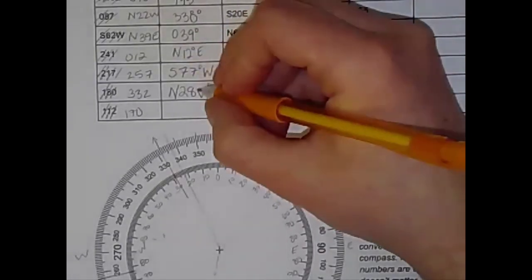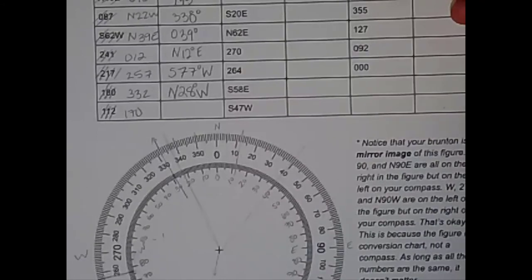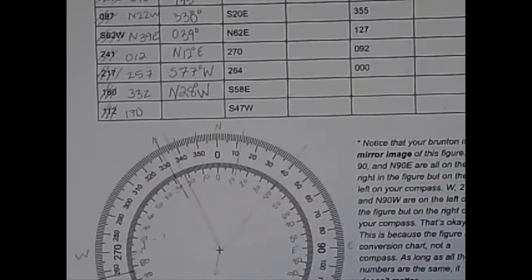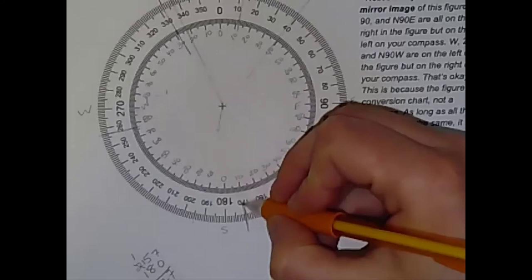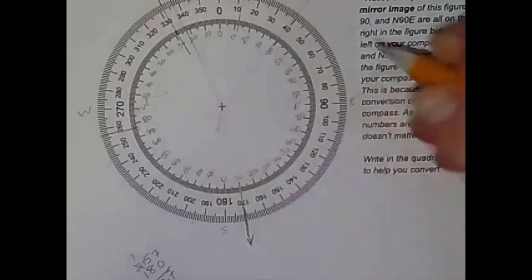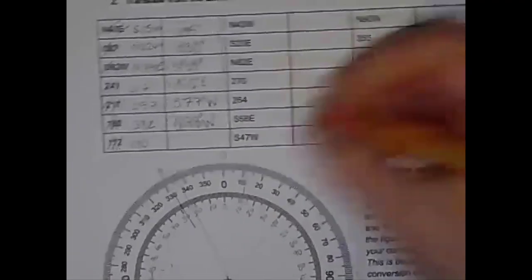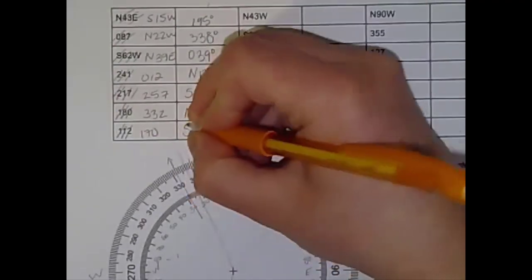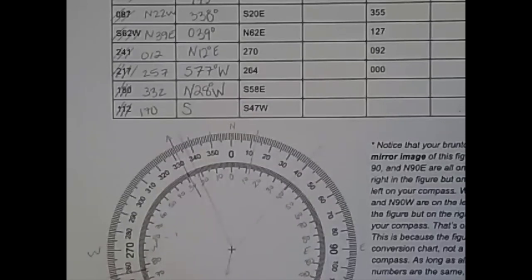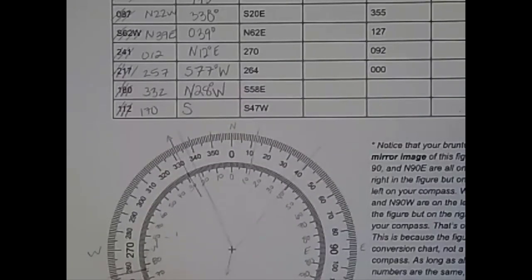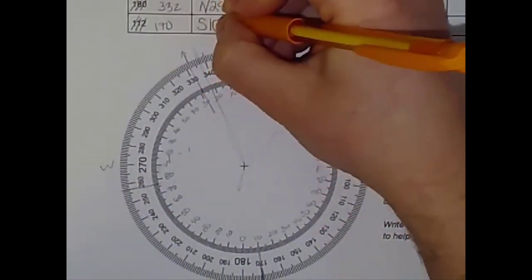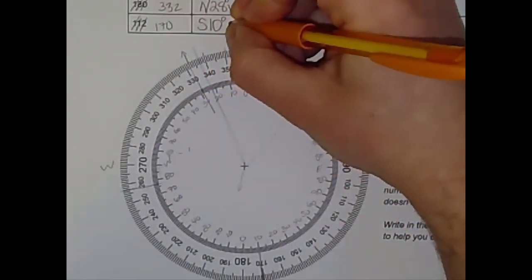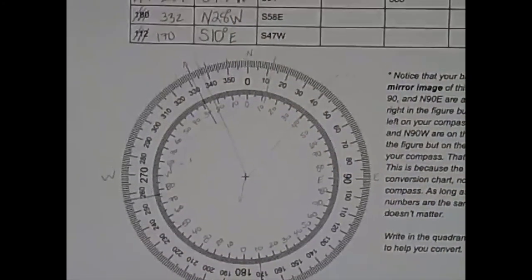Last conversion example. Let's do 170. I'm going to come down here to 170. Mark that. That's my orientation. And here I'm closer to south. So south is going to be my first placeholder. And I'm 10 degrees from south. I'm 10 degrees to the east of south. So south 10 east is my answer.